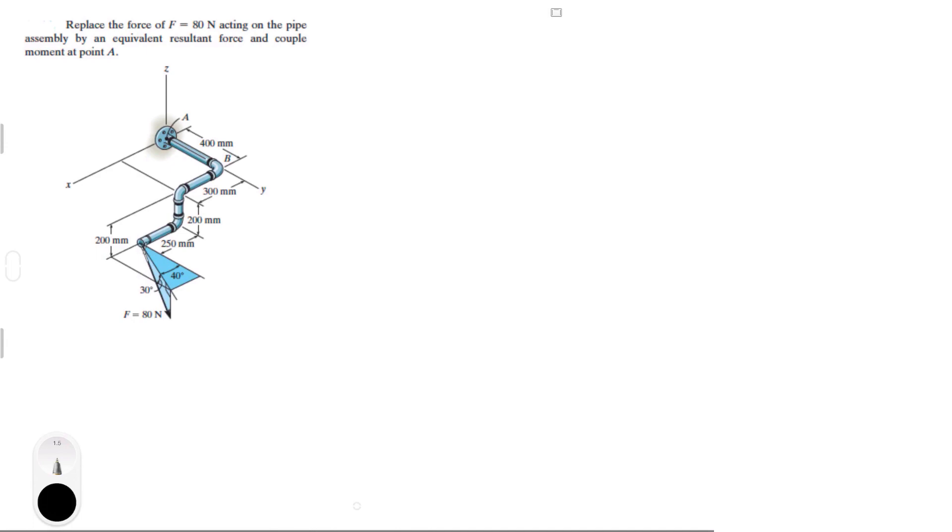Alright guys, let's do this problem that says replace the force F acting on the pipe assembly by an equivalent resultant force and coupled moment around point A which is right here. Don't let this problem intimidate you. It's simply one force. It's just that they didn't give you the Cartesian vector form of F.